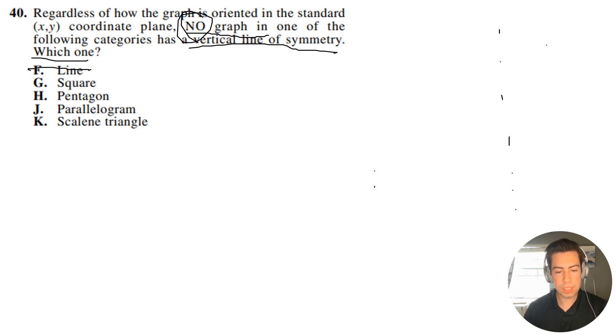So what about a square? Now hopefully this one's more straightforward, but if you have a square, it looks something like that. We have vertical line of symmetry, and if it looks like this, we still have vertical line of symmetry. So square's out.